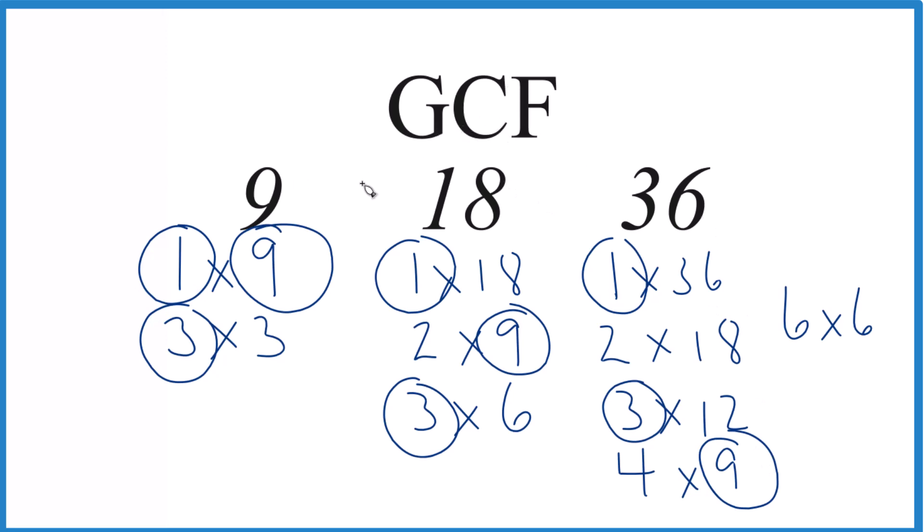That makes the GCF for 9, 18, and 36, 9. You could do this other ways with prime factorization, for example, but for something like this where we have relatively small numbers, this is a pretty good way to do it.